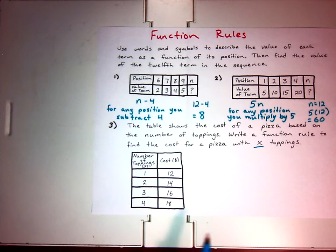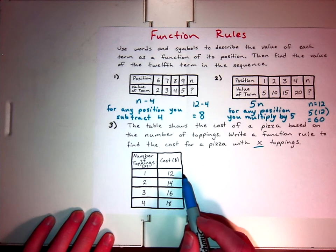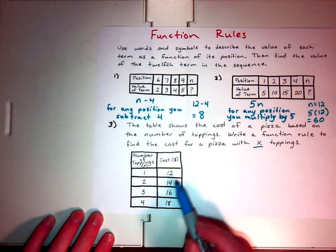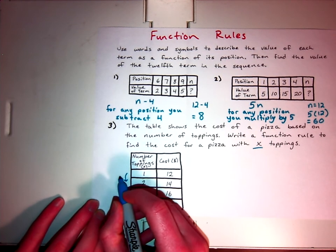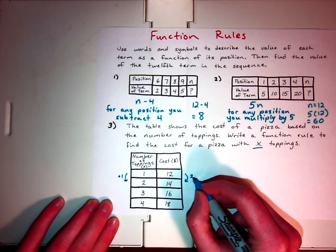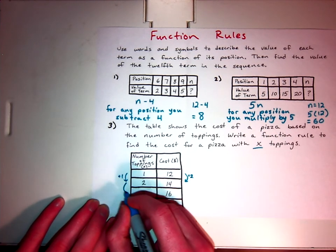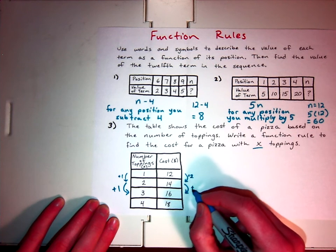So what I'm going to look for is, as each of these increases 1, the number of toppings, it's increasing 1. Then, as that increases by 1, this is increasing by 2. As this increases by 1, this is increasing by 2. As this increases by 1, this is increasing by 2.